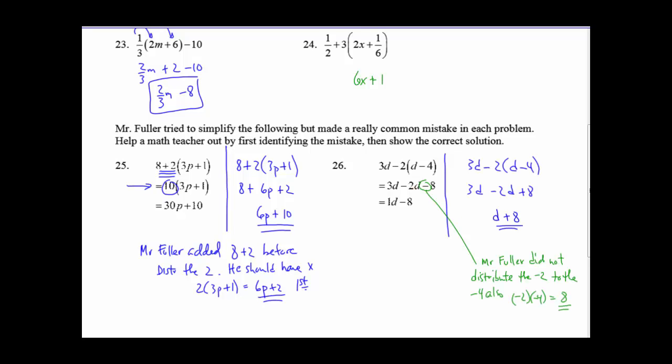Welcome back. Notice, Mr. Fuller got D minus 8. You should have gotten D plus 8. What did he do? Well, he did not distribute this negative 2 to the negative 4 also. He just took 2 times that negative 4 and got negative 8. So Mr. Fuller was wrong. Congratulations if you got that right.